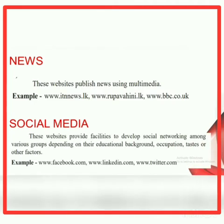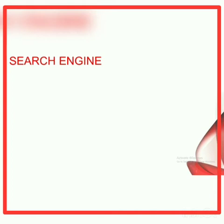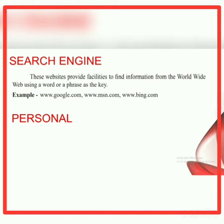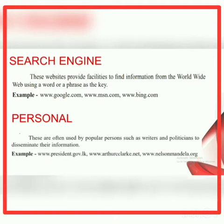The sixth type is social media — these websites provide facilities to develop social networking among various groups, for example www.facebook.com. The seventh type is search engines, which are resources serving as keys to finding relevant information on the internet, for example www.google.com. The eighth type is personal websites, often used by popular persons such as politicians and writers, for example www.president.gov.lk.